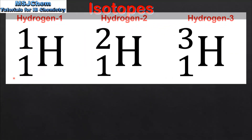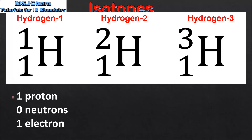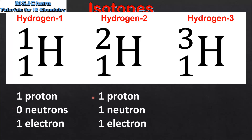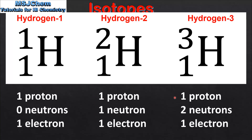Next we look at the three isotopes of hydrogen. Starting with the isotope on the left, which has 1 proton, 0 neutrons and 1 electron. Next we have hydrogen-2, which has 1 proton, 1 neutron and 1 electron. And finally hydrogen-3, which has 1 proton, 2 neutrons and 1 electron.